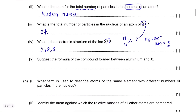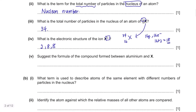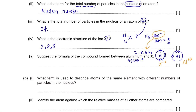Suggest the formula of the compound formed between aluminium and X. Element X has 6 outer electrons and aluminium is in group 3, so it has 3 outer electrons. As a result, Al₂X₃ would be formed.